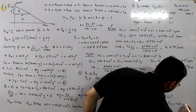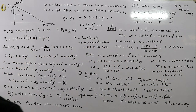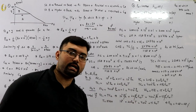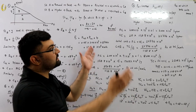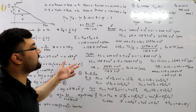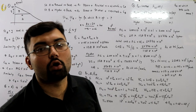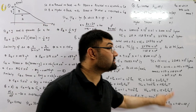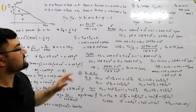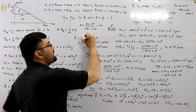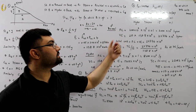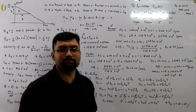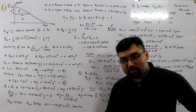So if the load center operates at a load factor of 68%, the cost of electricity from thermal equals that from hydro. As a homework exercise, confirm this by recalculating the energy units at fld = 68% and verifying that the per-unit costs come out equal.